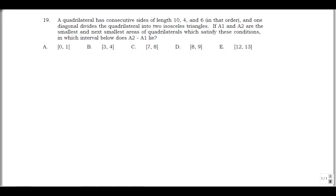This is problem 19 from the Spring 2015 AMATX Student Math Leagues Contest. It says a quadrilateral has consecutive sides of length 10, 4, and 6 in that order, and one diagonal divides the quadrilateral into two isosceles triangles. A1 and A2 are the smallest and next smallest areas of the quadrilaterals which satisfy these conditions.